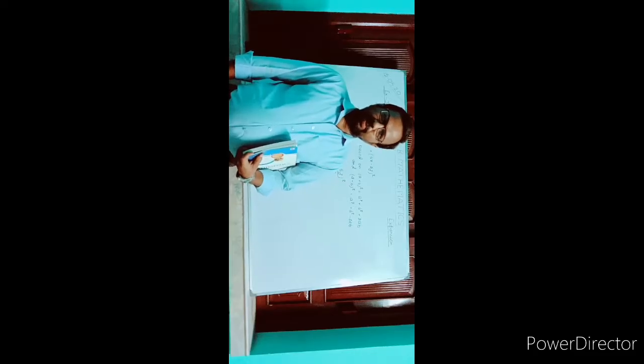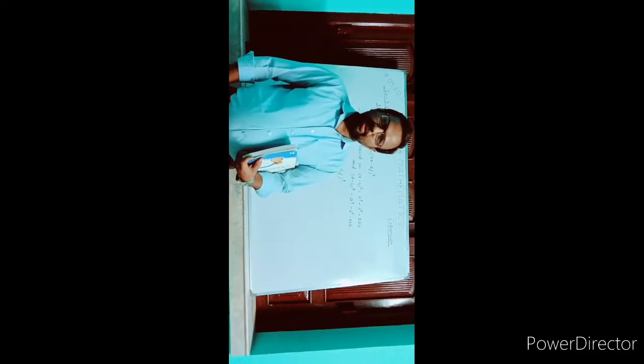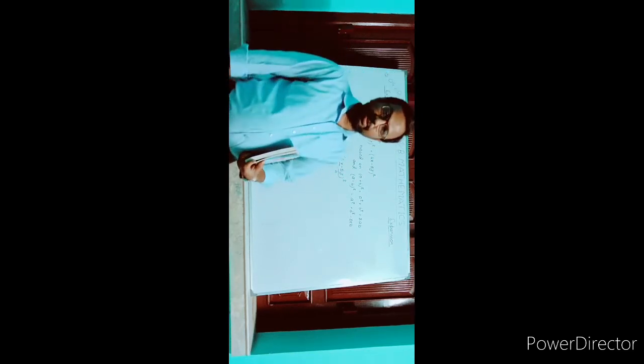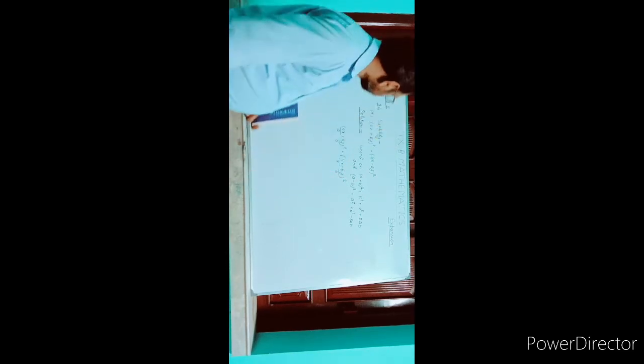Good morning, students of 9B. In the period of mathematics, the chapter Expansion is continuing. We are solving Exercise 3.2, question number 24. The question is: simplify (4x + 5y)² + (4x - 5y)².